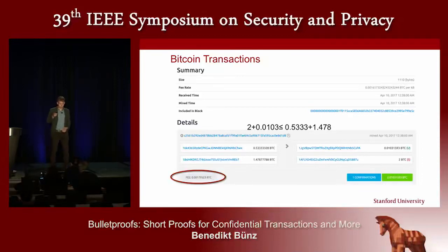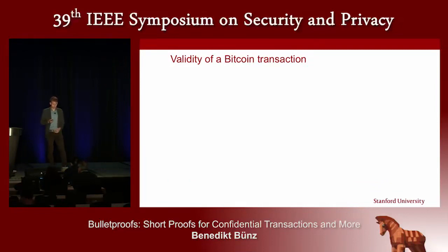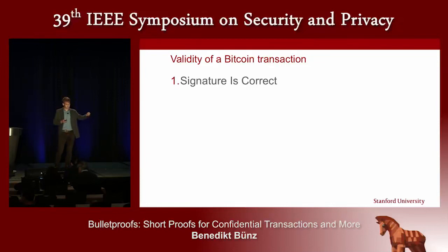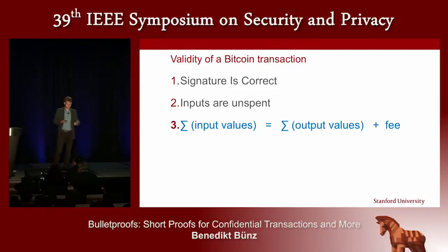How does a miner validate a transaction? A miner or any full node can validate a Bitcoin transaction by checking that the signatures are correct — so a person was authorized to spend the money — that the inputs are unspent, so you cannot spend the same money twice, and that the sum of the inputs is equal to the sum of the outputs plus the fees.